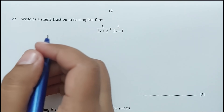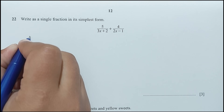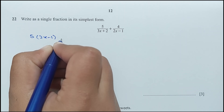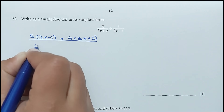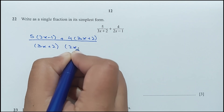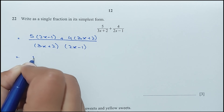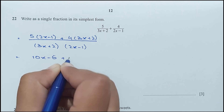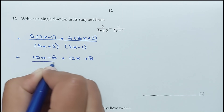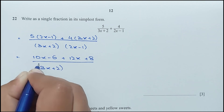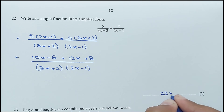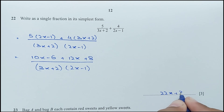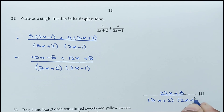Question number 22: write as a single fraction in its simplest form. Cross multiplying: 5(2x−1) + 4(3x+2) over (3x+2)(2x−1). Expanding the numerator: 10x − 5 + 12x + 8 = 22x + 3. So the answer is (22x + 3)/((3x+2)(2x−1)).